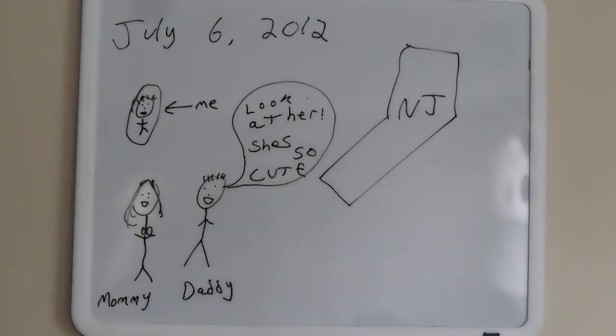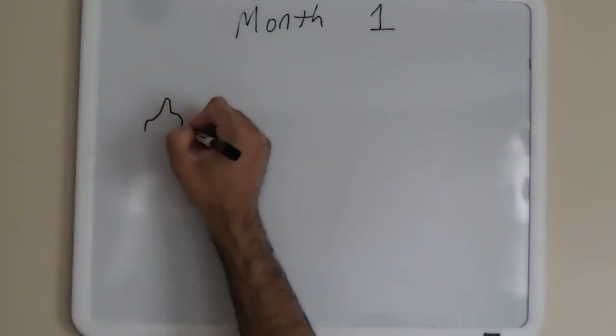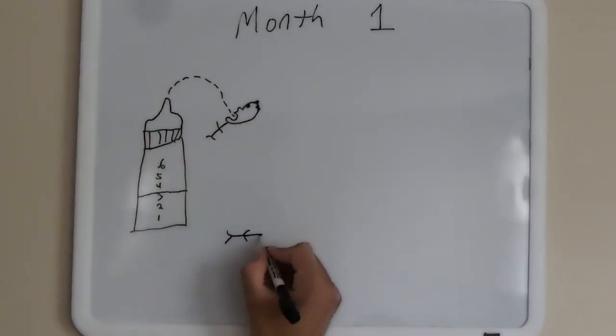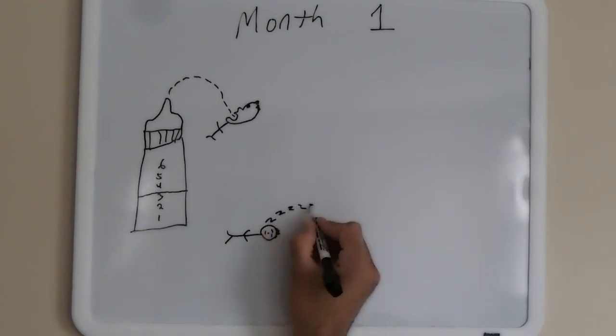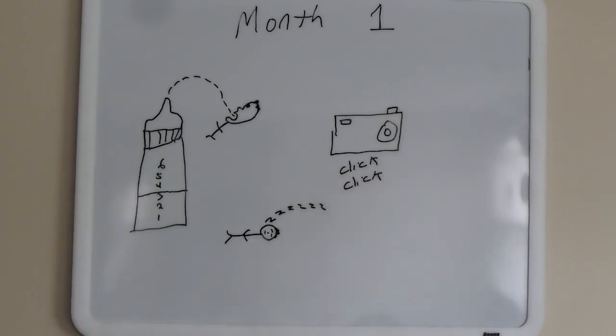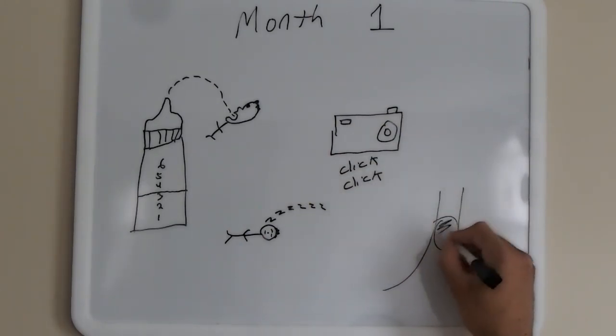And they thought I was the cutest thing ever. So for my first month, all I did was eat and sleep all day. I ate, I took a nap, I ate some more, I took another nap. And all Mommy and Daddy did was take pictures of me all the time. Click, click, click, taking pictures of me.